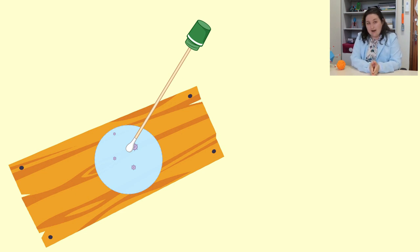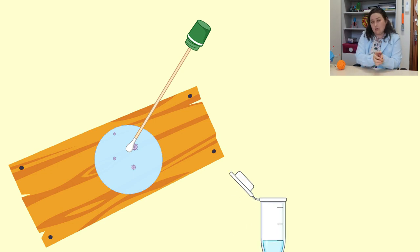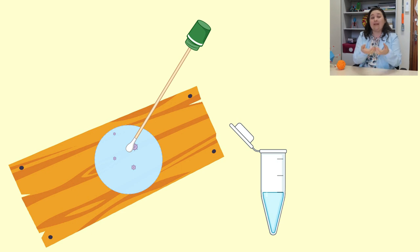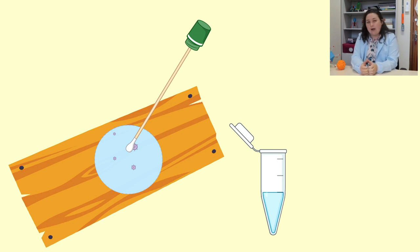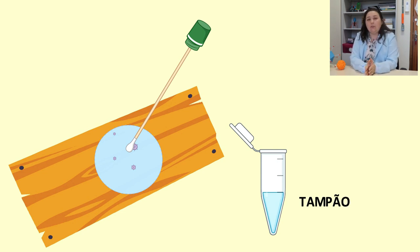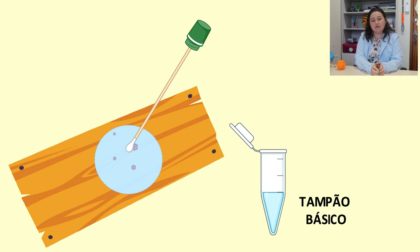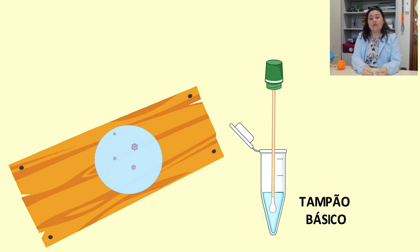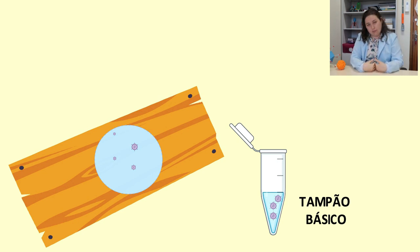De posse desse material concentrado com as partículas virais, passamos ao passo de eluição, que é lavar esse material para que as partículas virais sejam soltas do filtro, do suabe, da toalha, enfim, do material de coleta. Para isso, comumente adicionamos um tampão, mas nesse caso utilizamos tampões muito mais básicos, a fim de desestabilizar as cargas virais, fazendo com que os vírus se soltem do material coletado para esse material tamponado.